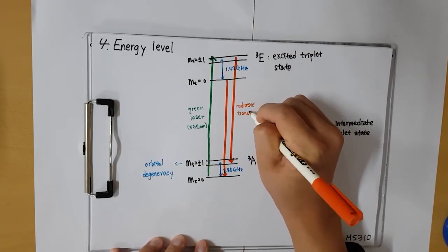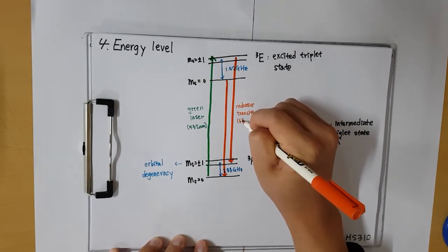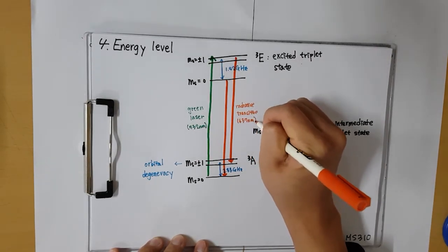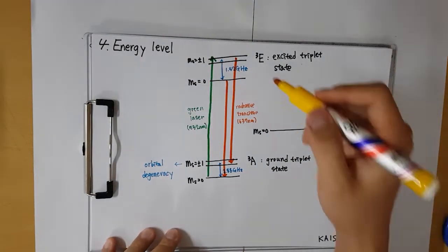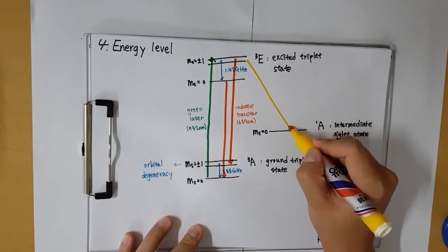In this process, we can initialize the electron spin state to ground state. However, as we mentioned before, there is another path through the non-radiative transition.